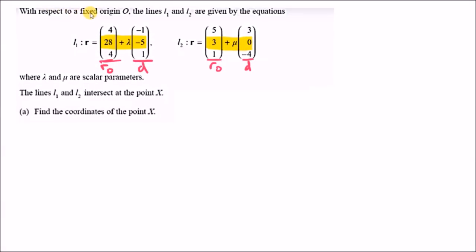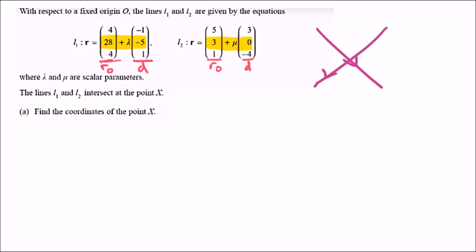New problem: lines L1 and L2 are given by position vector equations. L1 has initial position vector and direction vector with parameter λ; L2 has its own with parameter μ. The question states L1 and L2 intersect at point X — find the coordinates of X.